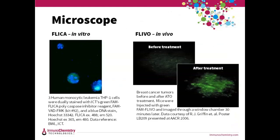FLIVO and FLICA are easily detected with a microscope. Here we're looking at green fluorescence with an excitation at 480 and emission at 520. In the FLICA picture at left, we see three different human monocytic leukemia THP-1 cells that were treated with staurosporine to induce apoptosis. They were dually stained with FAM FLICA polycaspase inhibitor reagent, which is green, and a blue DNA stain, Hoechst. Only the middle cell is apoptotic — it's green with FLICA and has many bright blue spots indicating DNA breakdown. The cell in the lower right is alive with no green staining and concentrated blue DNA. The cell in the upper left is necrotic — no green, and the blue Hoechst stain is scattered throughout.